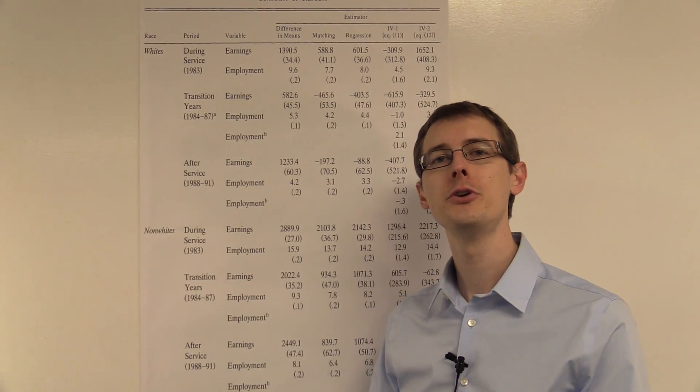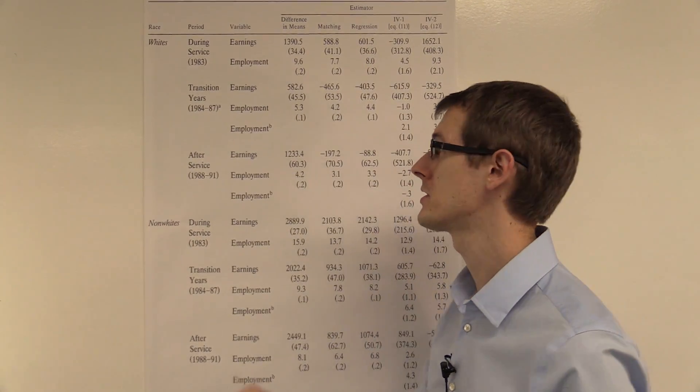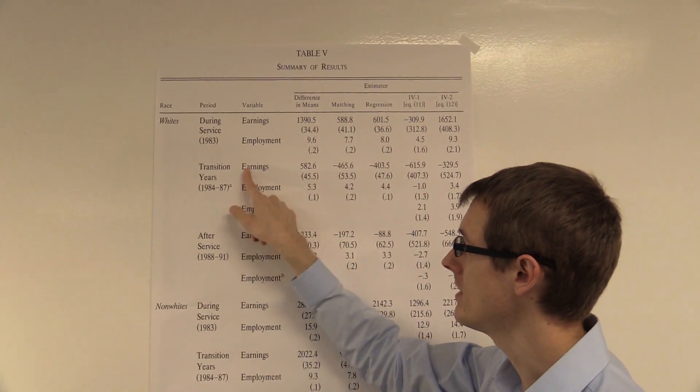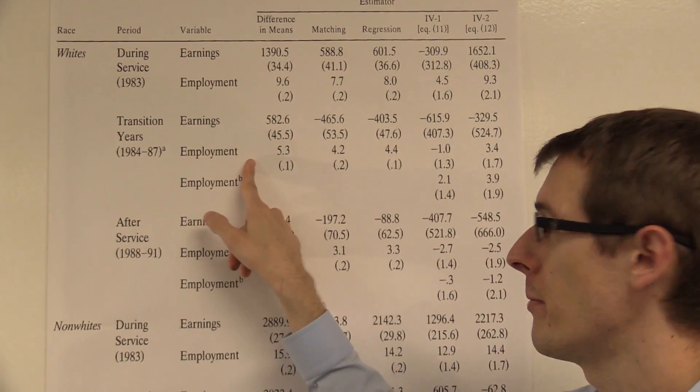Furthermore, he's going to look at two different outcome variables: how much money you actually make, which we saw in the previous graph, which he labels earnings; and then whether you are employed or not, which he labels employment.